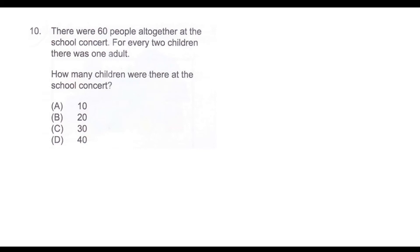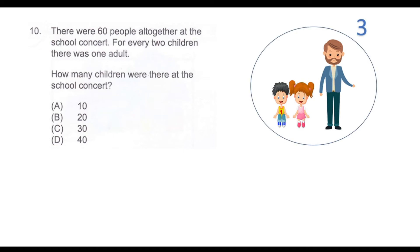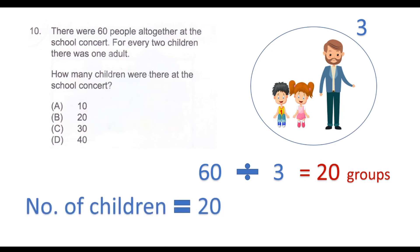There were 60 people altogether at the school concert. For every 2 children there was one adult. How many children were there at the school concert? They're saying for every 2 children there will be an adult, so groups of 3. Out of the 60 people we divide in groups of 3, which gives us 20. In these 20 groups there will be 1 adult and 2 children. Hence, the total number of children will be 20 times 2, which is 40. Our answer is option D.